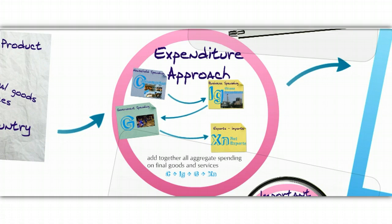There are two ways to figure out the GDP. The first way is the one that we're going to focus on mostly in this class. I'll show you the second way, but you won't need to memorize it in the same way as the first one. The first one is called the expenditure approach.